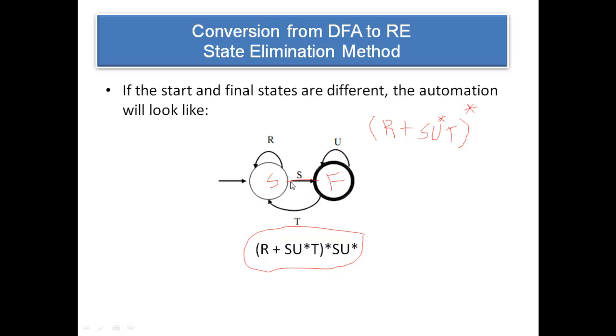The next way is you can go to final state by reading an edge S followed by a self loop represented as U, so I have represented by U star. Then again I can come back to the start state by reading an edge T. This you can repeat any number of times, so I have embedded it and enclosed it within this star enclosure.